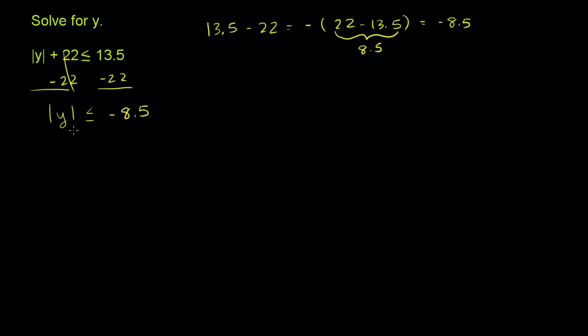Because when you take the absolute value of anything, what do you know you're going to get? If I tell you that the absolute value of any number, we'll just say the absolute value of a is equal to x. What do you know about x? You know that x is non-negative. It's either a positive number or 0.